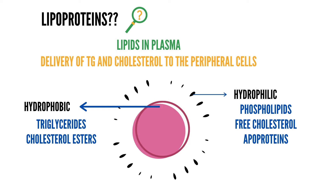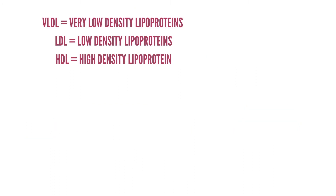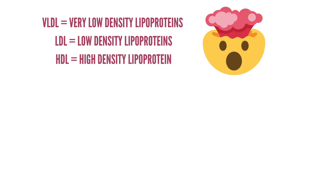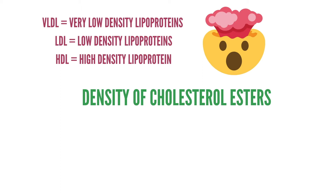When we say very low density, low density, and high density lipoproteins, what do we mean by density? We are referring to the density of cholesterol esters. Very low density lipoproteins have the lowest density of cholesterol esters, and high density lipoproteins have the highest. Since VLDLs are low in cholesterol esters, they are rich in triglycerides. Another group rich in triglycerides is chylomicrons.